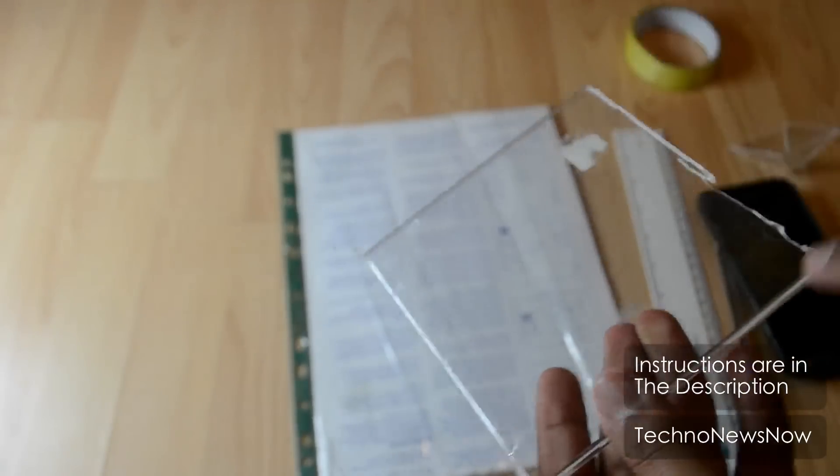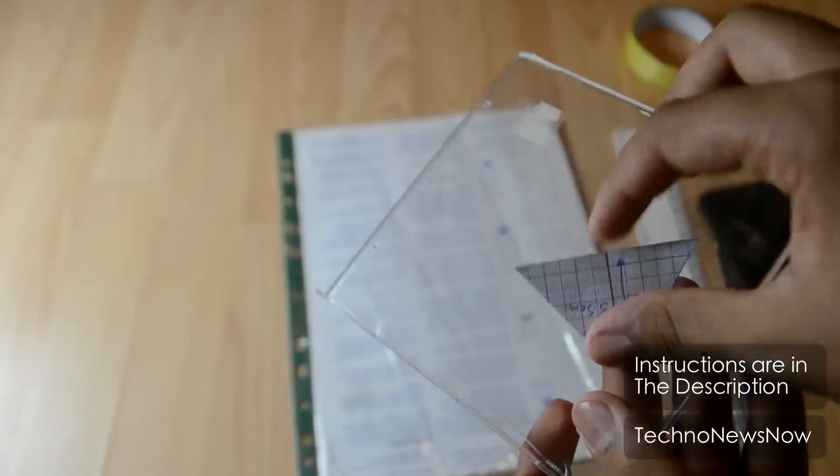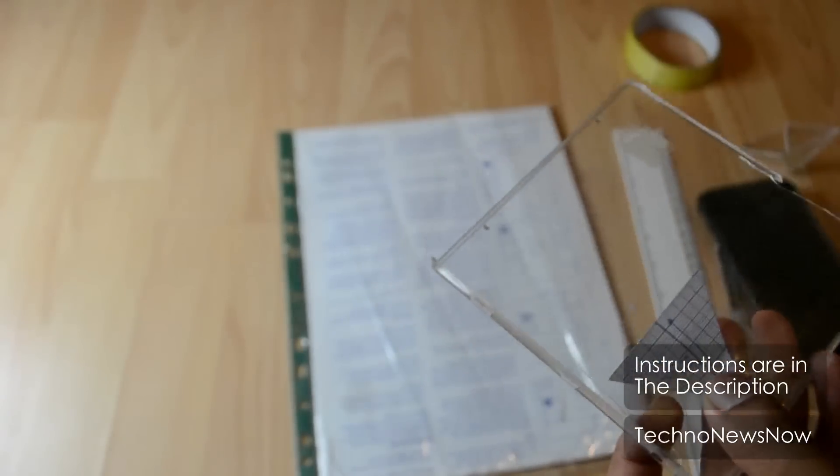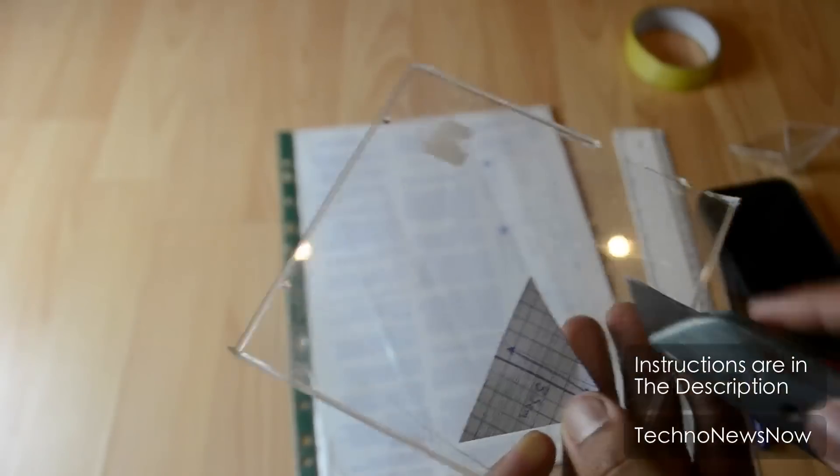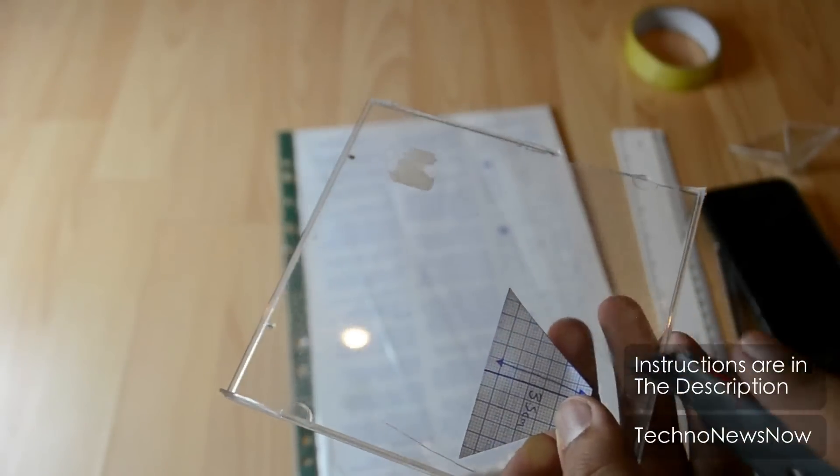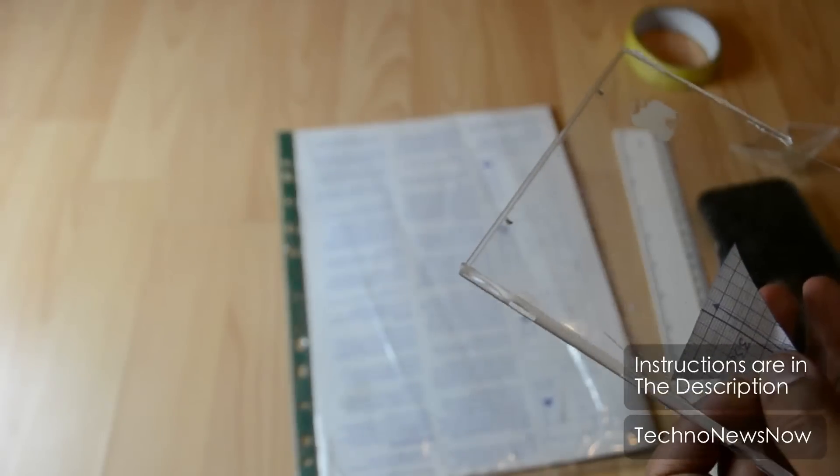Once you've done that, once you've cut out all four of these rhombus shapes, you want to join them together and tape it all up like I did with my little pyramid. When you make it, there's supposed to be a square at the bottom.